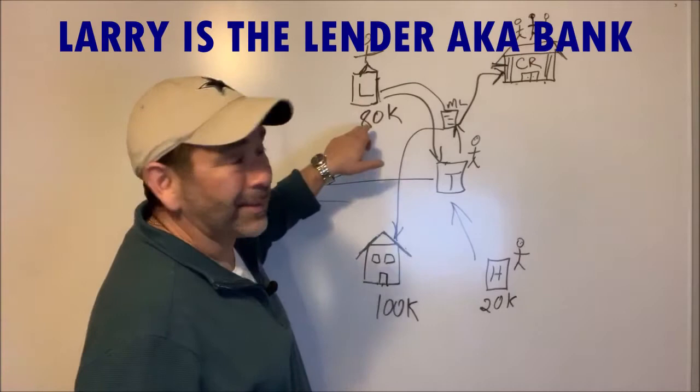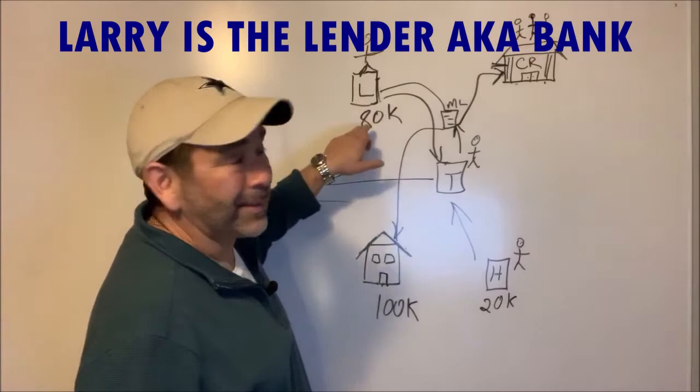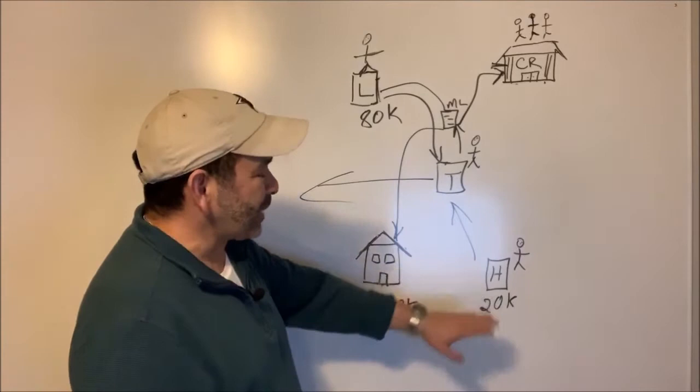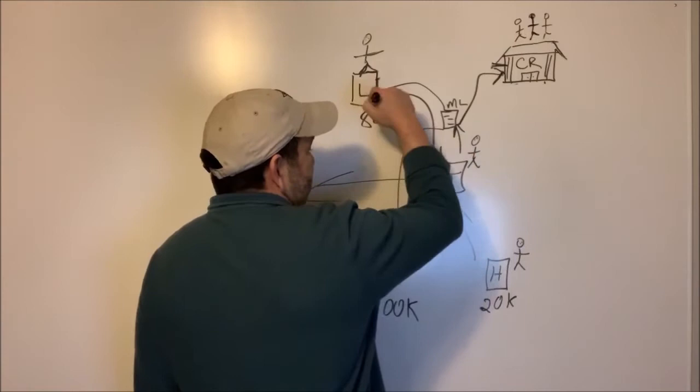That lien can only be released by Larry, so Larry probably isn't going to release it until his money is paid, until he gets all that money. Let's keep this kind of simple. Let's say Henry pays everything off over time. Henry doesn't owe Larry any more money.